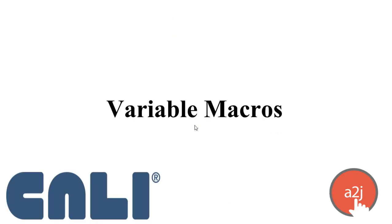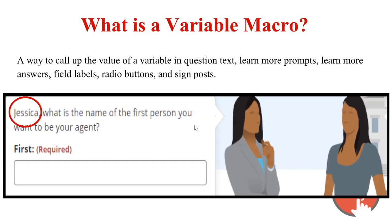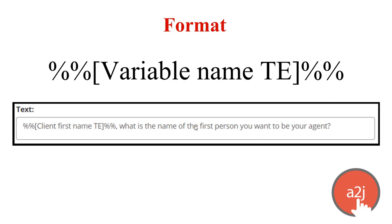First up is variable macros. A variable macro is a way to call up the value of a variable in question text, learn more prompts, learn more answers, field labels, radio buttons, and signposts. It's a great way for you as an author to customize your interview based on information the end user has already given you. The format is: double percent sign, bracket, the name of the variable, close bracket, double percent sign. You can see in this screenshot that it's used in the text section to call out the client's first name.